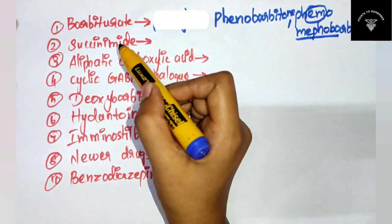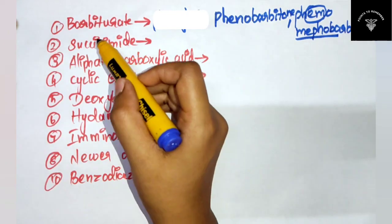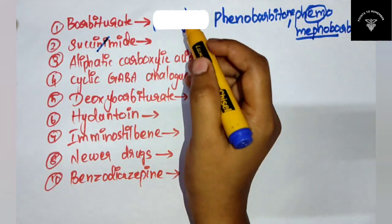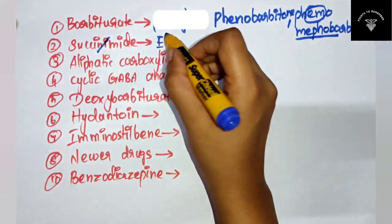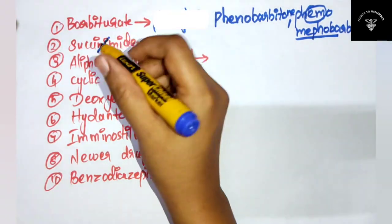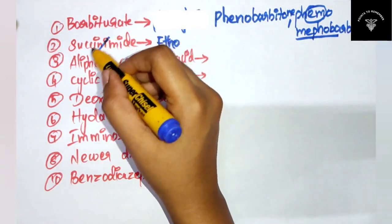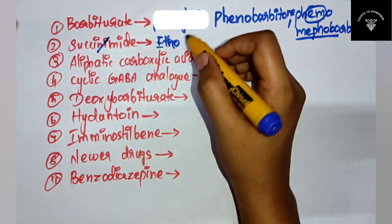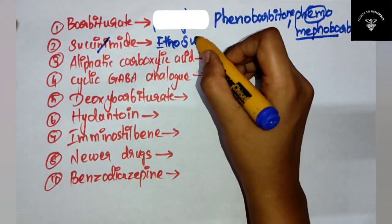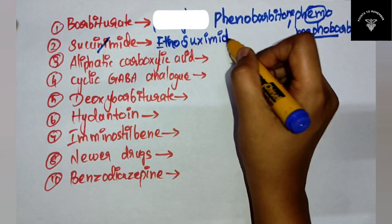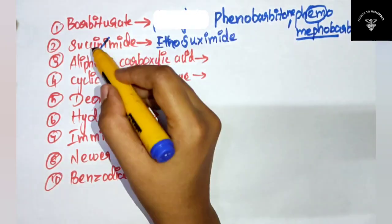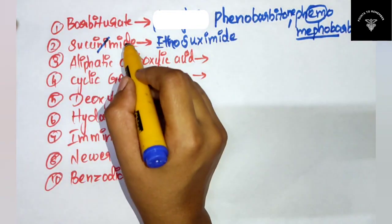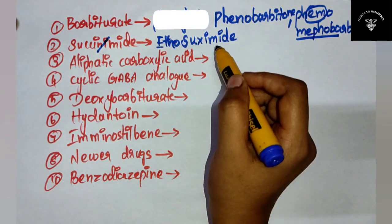Next is succinamide. You just have to cancel the 'N-I'. Then if you pronounce it, it will be succinamide. That is ethosuximide - you cancel those letters and it becomes succinamide.